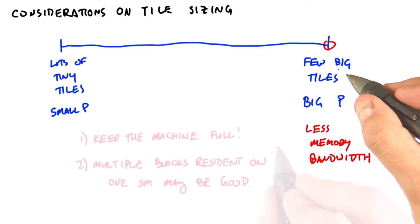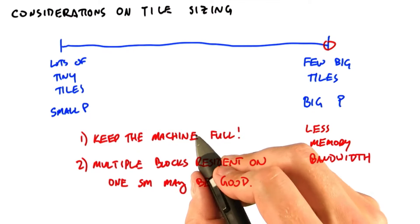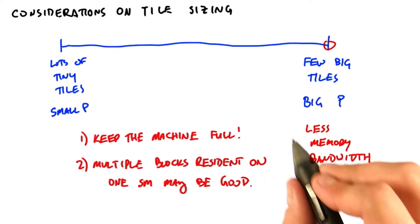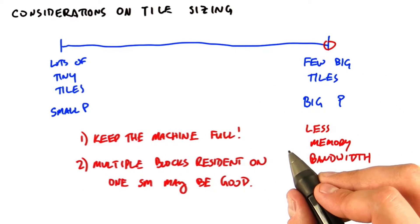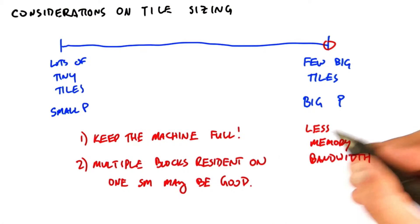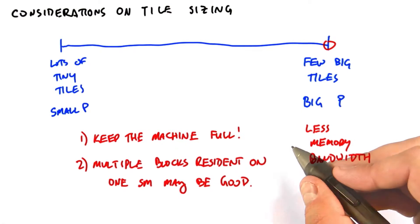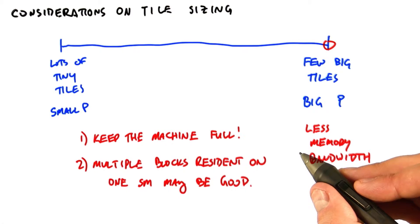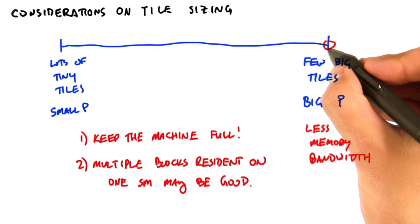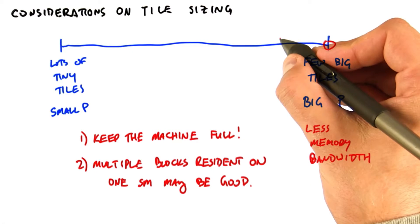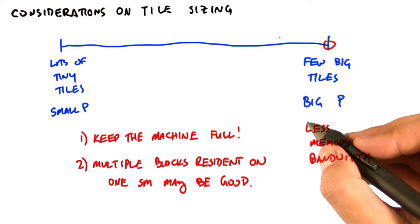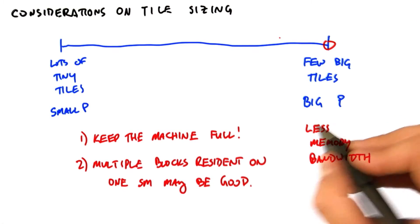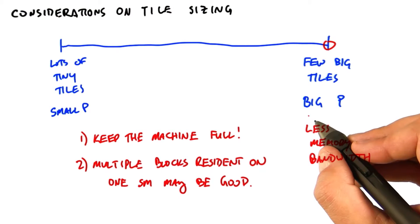Note the following two caveats. One: you need to have at least as many thread blocks as you have SMs in your GPU, because otherwise you'll have SMs sitting idle. Definitely make sure you fill the machine with enough work to keep all the SMs busy, even if you have to move a little bit on the continuum and size your tiles just a little bit smaller.